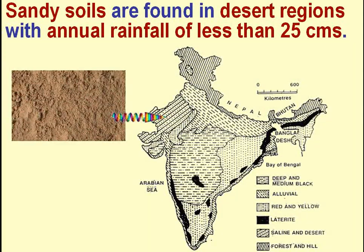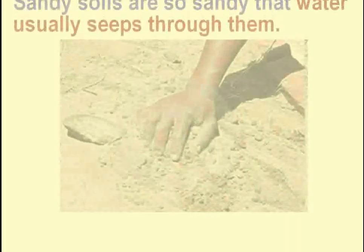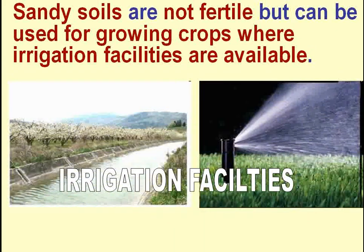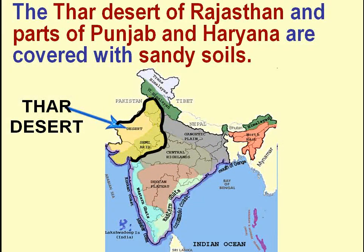Sandy soils are found in desert regions with annual rainfall of less than 25 cm. They are very low in humus content and water usually seeps through them easily. Sandy soils are not fertile but can be used for growing crops where irrigation facilities are available. Crops like wheat, gram, cotton, dates and other fruits can be grown in sandy soils. The Thar desert of Rajasthan and parts of Punjab and Haryana are covered with sandy soils.